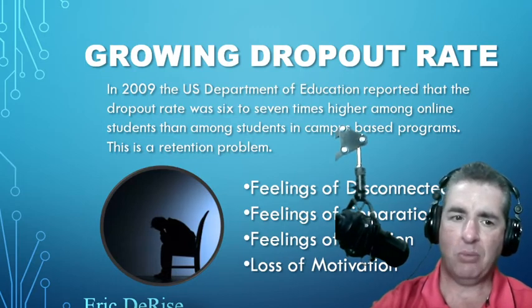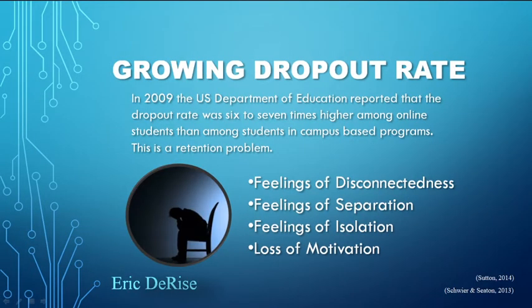That raised a few eyebrows and people were concerned. They started to inquire: this is a retention problem — what's causing it? What were these adult learners who were dropping out experiencing? They were experiencing feelings of disconnectedness, feelings of separation, feelings of isolation, and a loss of motivation.